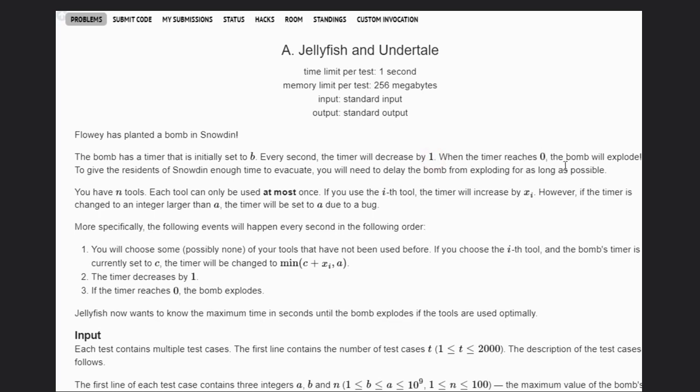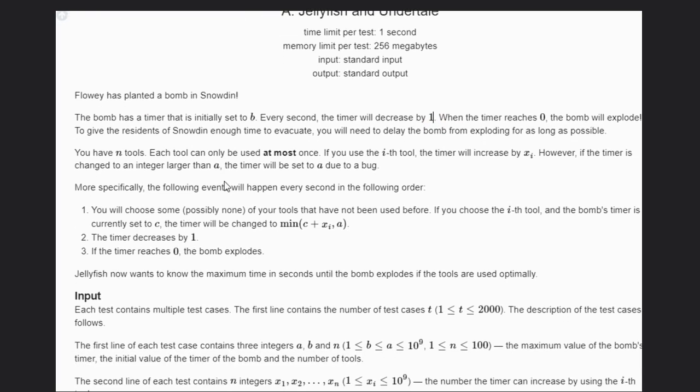When the timer reaches zero, the bomb will explode. To give the residents of Snowdeal enough time to evacuate, you will need to delay the bomb from exploding for as long as possible. We have N tools, each tool can be used at most once.